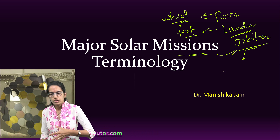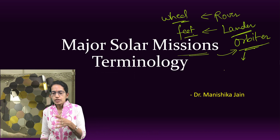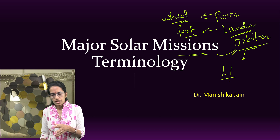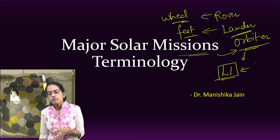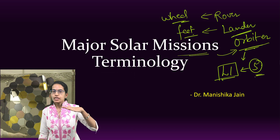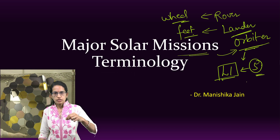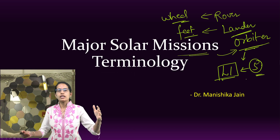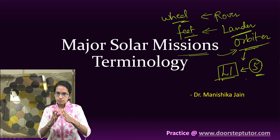Since it's a solar mission, we need to understand terminology related to the sun. L1 is one of the five Lagrange points, and the Lagrange point is a point where the Earth and the sun's mass balances.